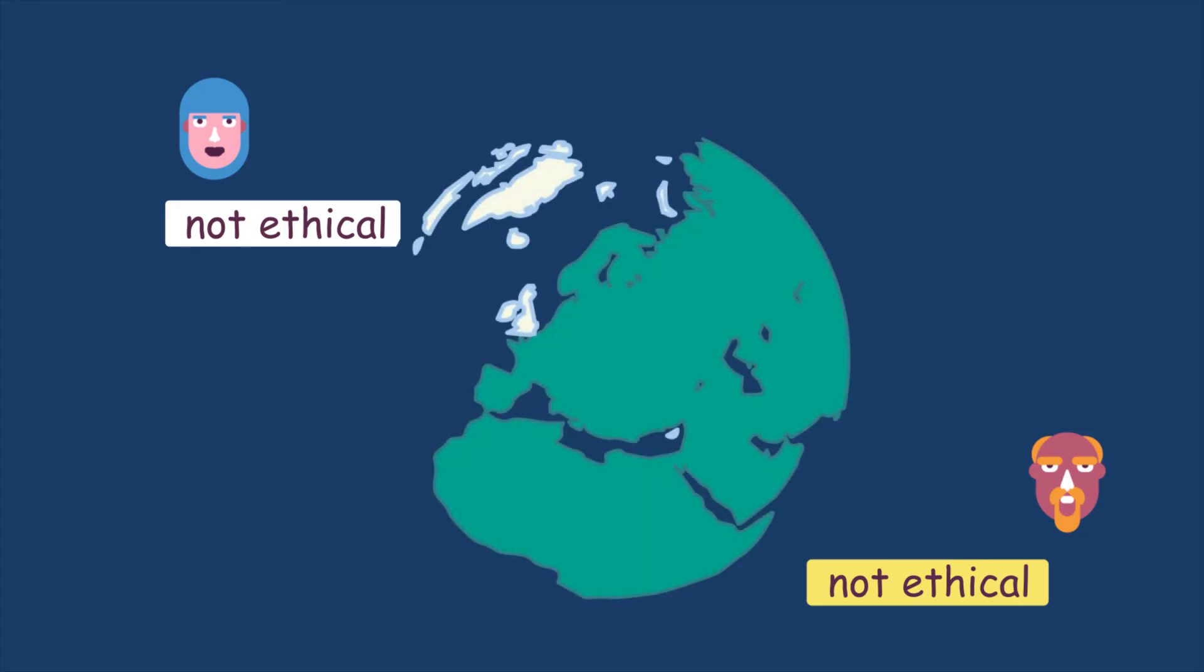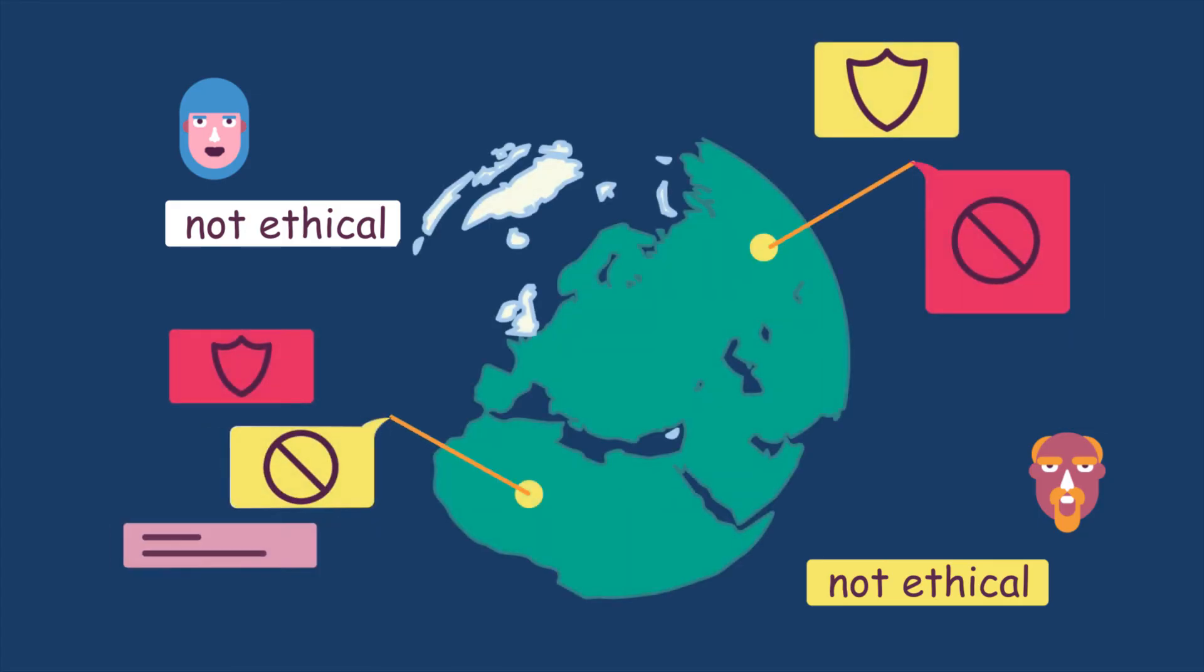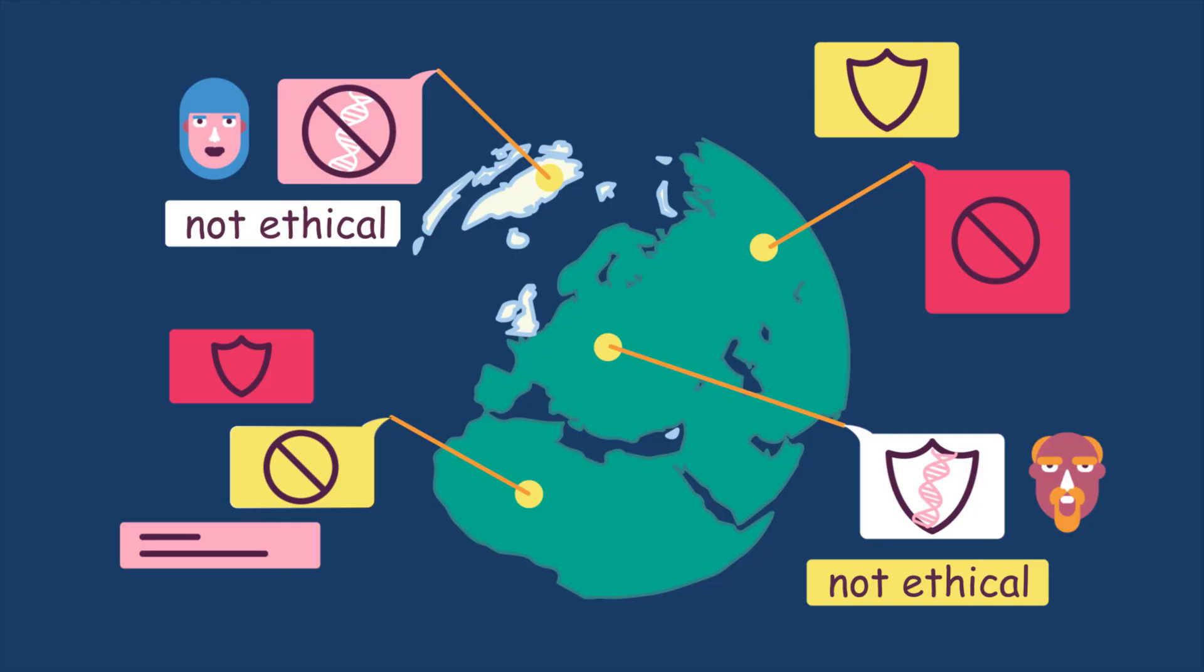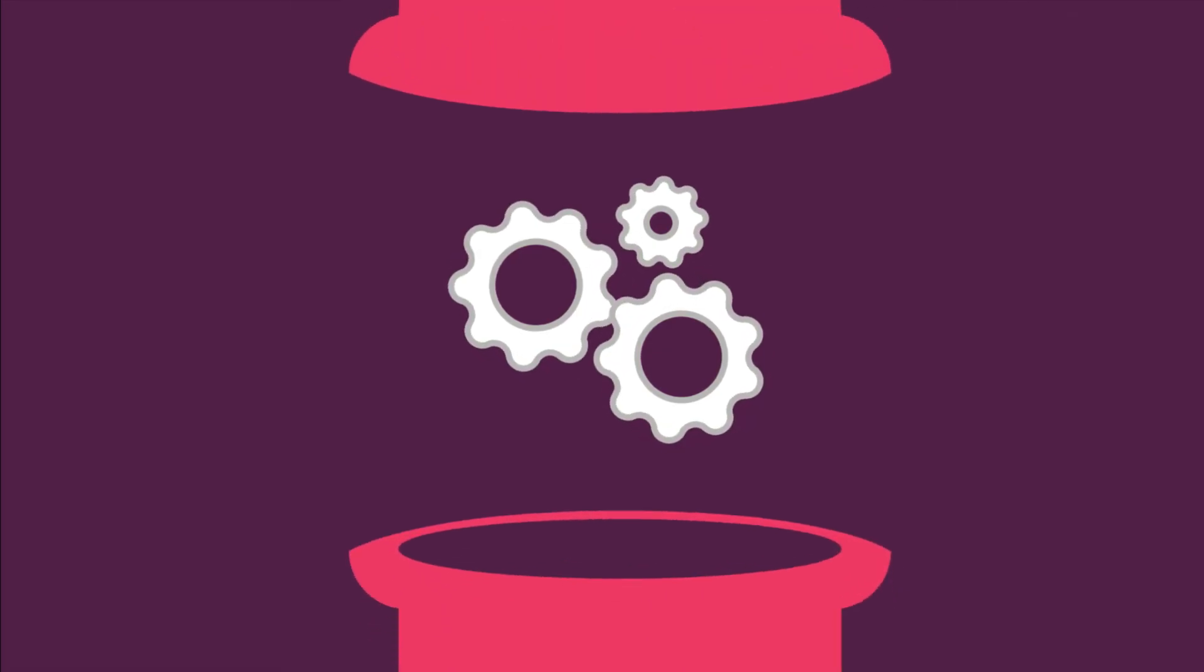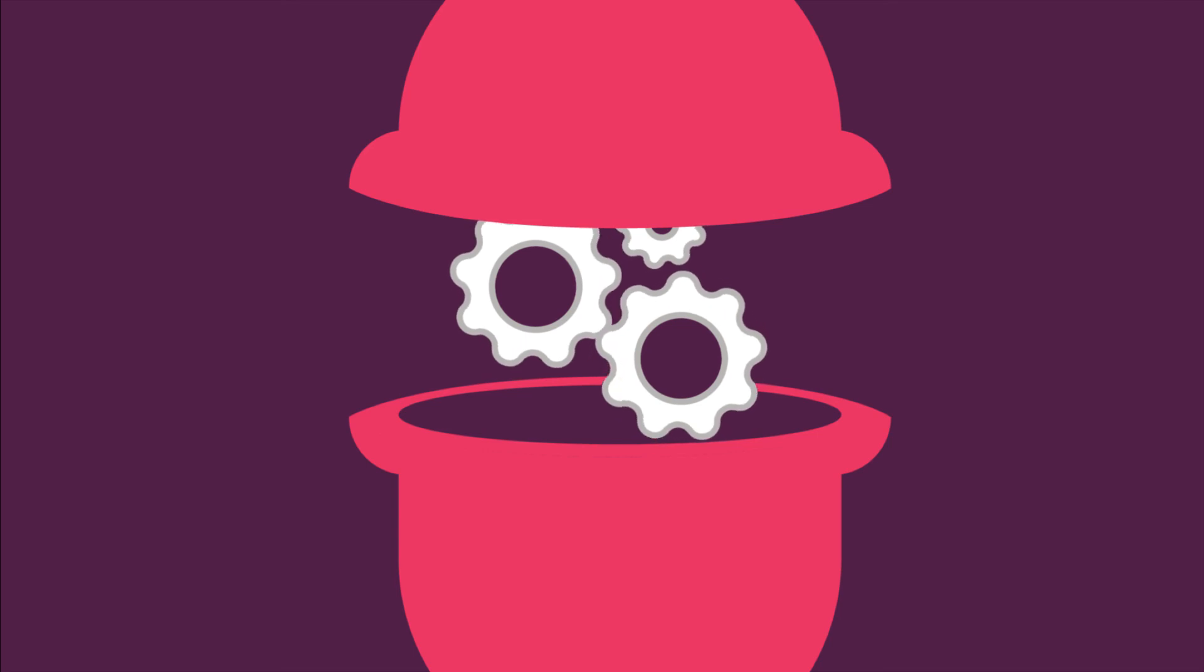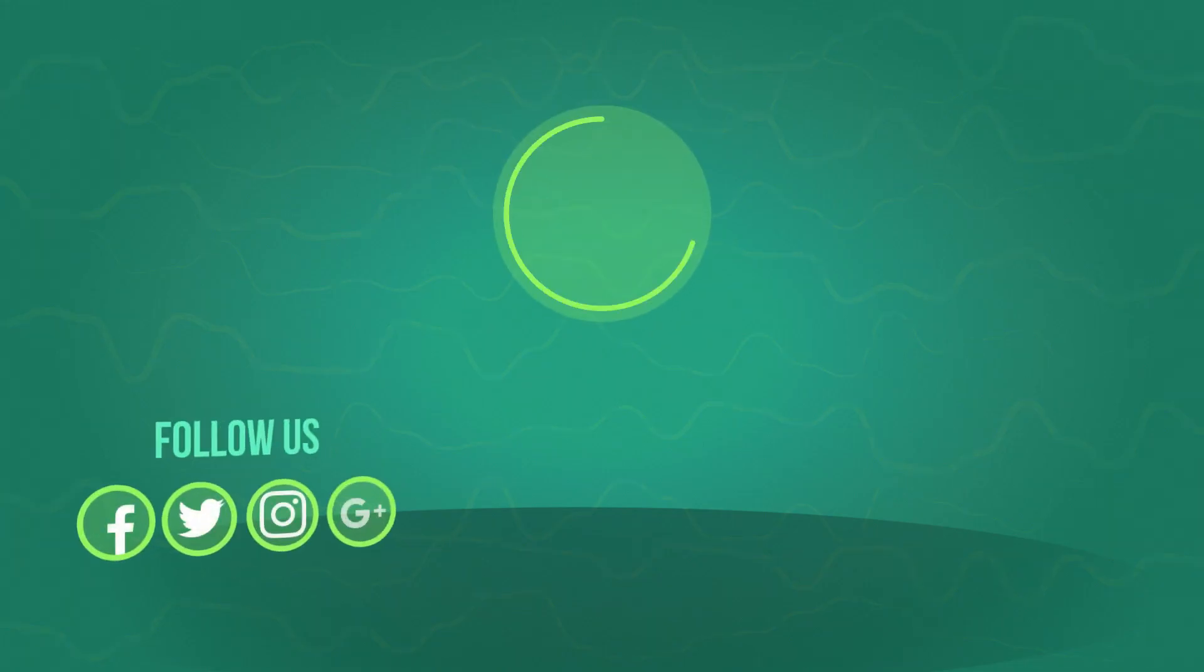In most countries, laws exist to control the use of gene technology. For example, most countries ban the editing or modification of genes in human embryos. These are all ethical issues that need to be carefully resolved legally and morally. Remember, science provides the technology, but humans must decide how that technology is used.